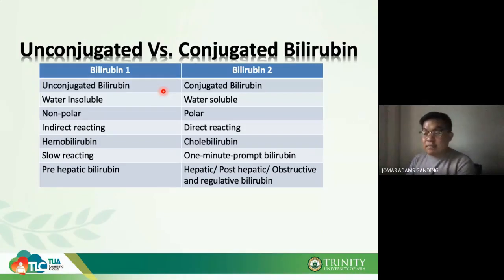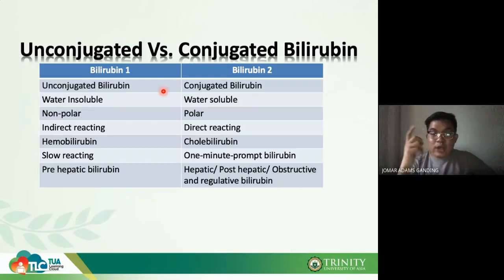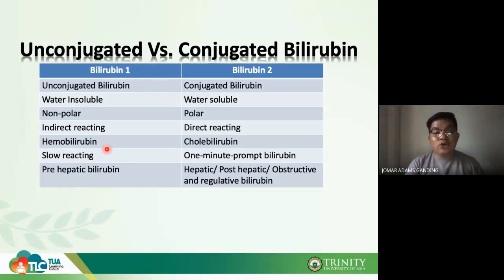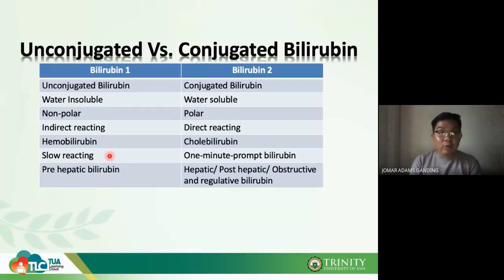B2 is called direct bilirubin because upon addition of diazo reagent, it immediately forms diazo bilirubin. B2 is a one-minute prompt bilirubin, meaning it is fast-reacting with the diazo reagent. The diazo reagent is used for the measurement of bilirubin. To summarize: B1 = unconjugated bilirubin = hemobilirubin = indirect bilirubin. B2 = conjugated bilirubin = direct bilirubin.